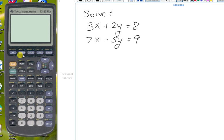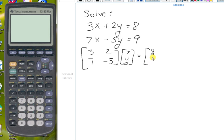To model an equation using matrices, we are going to take the coefficient matrix, so 3, 2, 7, and negative 5. And we are multiplying that times the variable matrix, and that equals the right side of the equation.